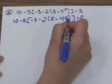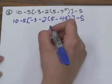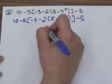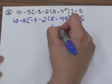Innermost grouping symbols, you want to do 5 minus 49. I'm going to get a negative answer there, which is going to give me negative 44.